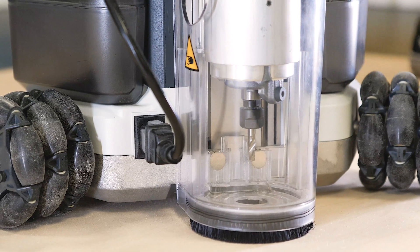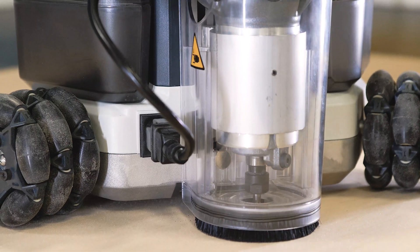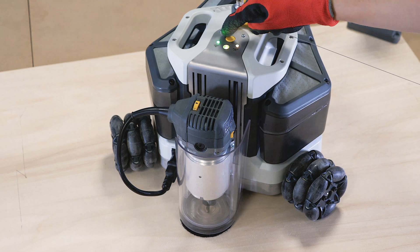The spindle will go down till the bit touches the working material and then it will lift again. Now everything is set up and you can start working by pressing again the button on the top of Goliath.